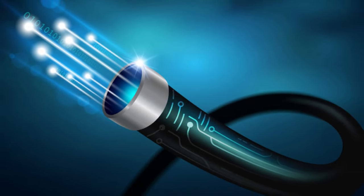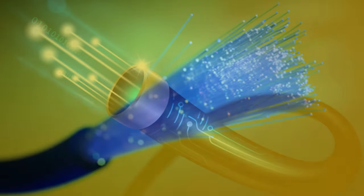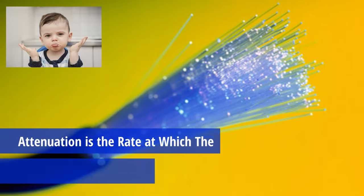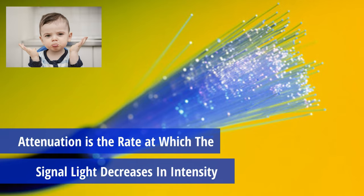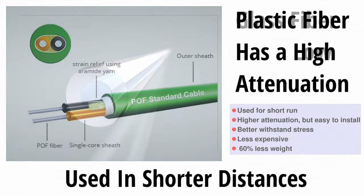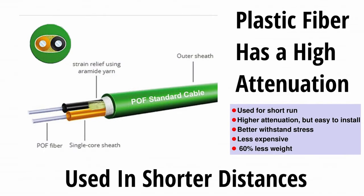This allows the signal to go farther without attenuation. So what does attenuation mean in fiber optics? Attenuation is the rate at which the signal light decreases in intensity. Glass fiber has a low attenuation, which is why it's used in long distance fiber optic cables, while plastic fiber has a higher attenuation and is used for shorter distances.